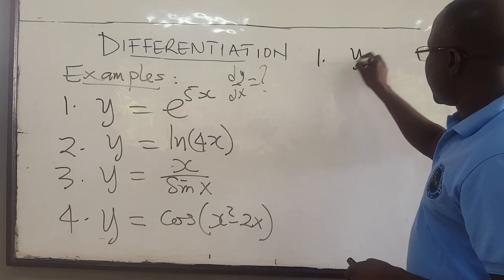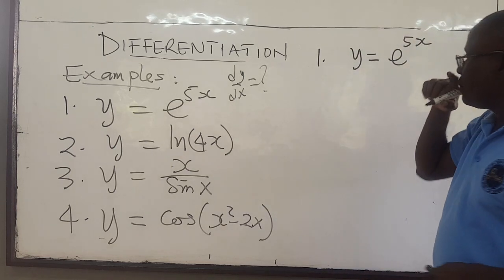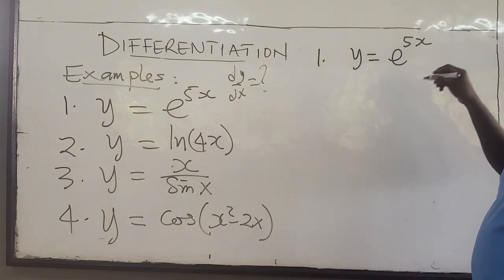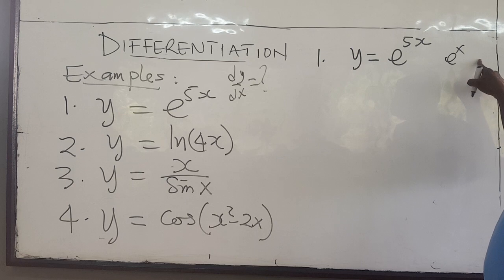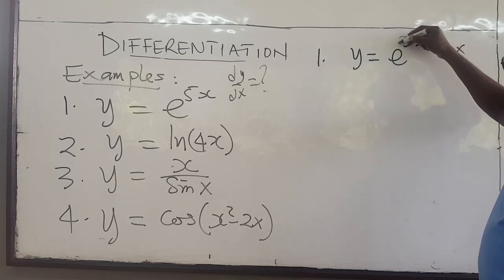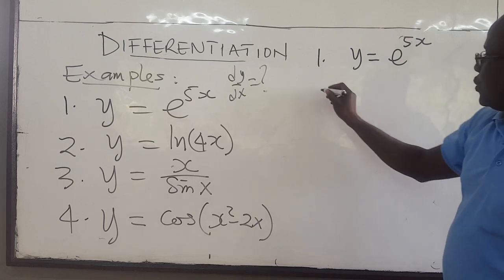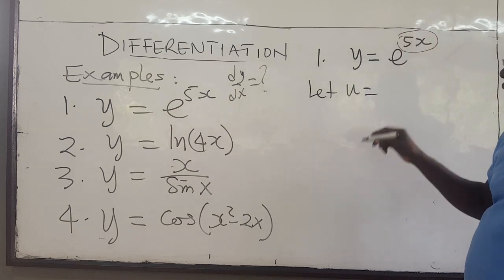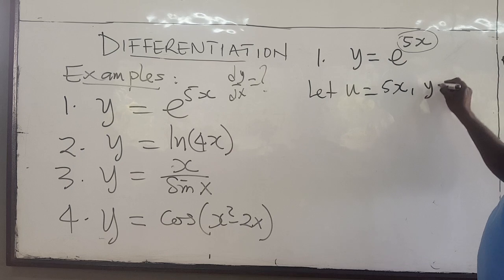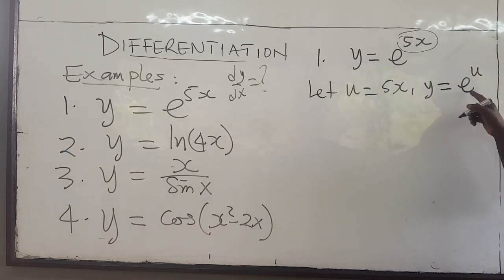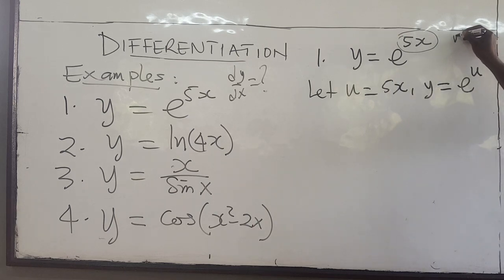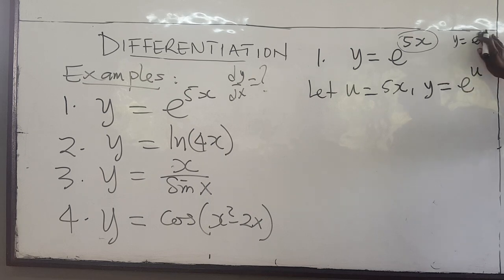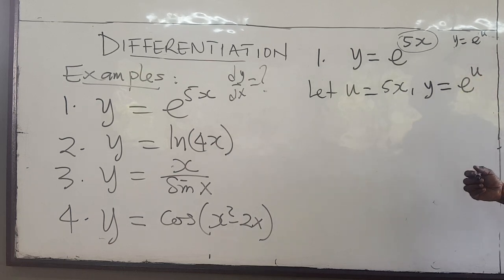Question 1: y is e to the 5x. Remember that we know how to find the derivative of e to the x — it's just e to the x. But now this is not just x; you have a factor of 5 multiplying here. So, using the chain rule, we let u equal 5x. This becomes your inner function, and y now becomes e to the u.